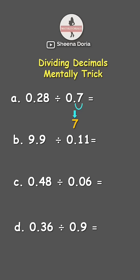Now since we move one time here, we also need to move one time in 0.28. There. So this becomes 2.8.